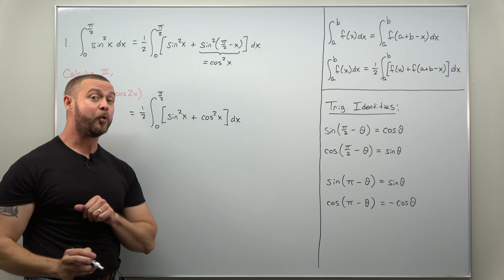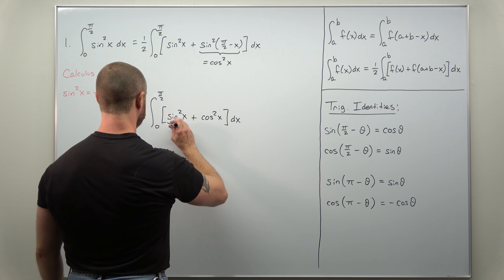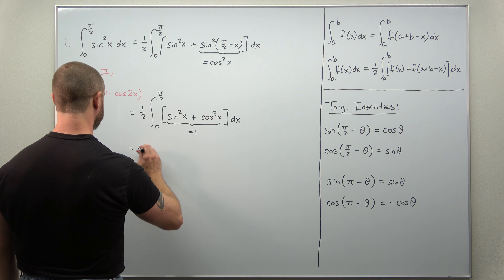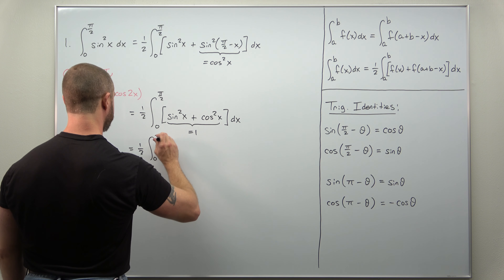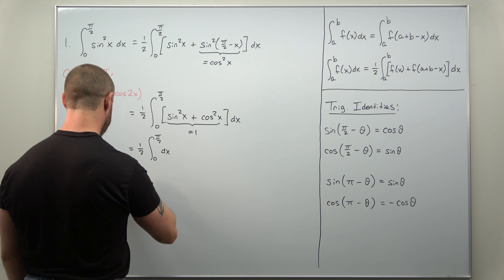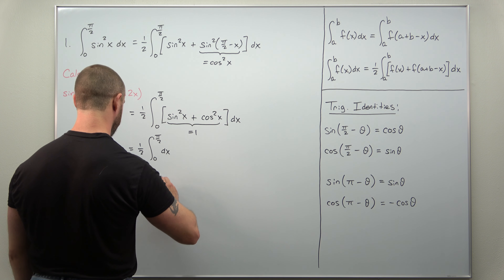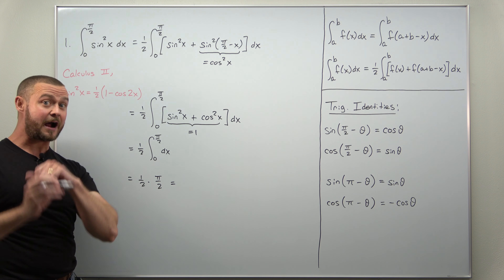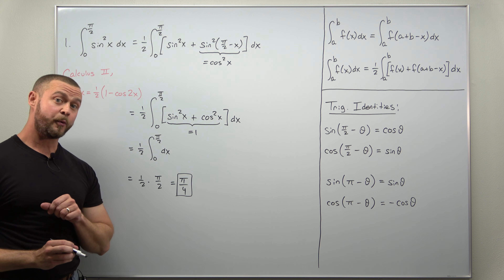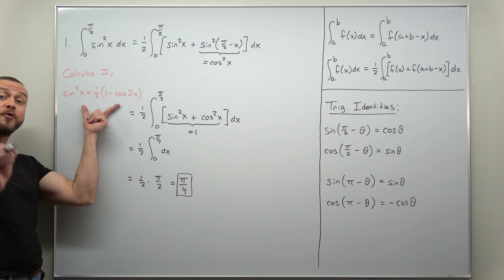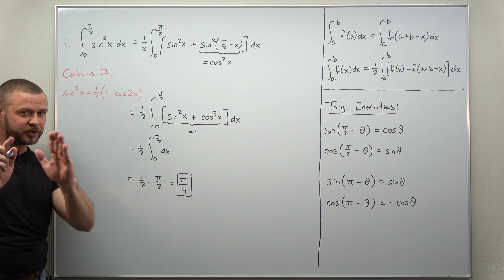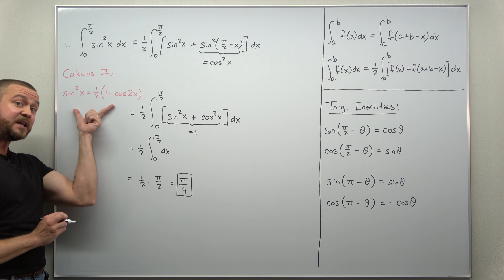Using the Pythagorean identity, sine squared plus cosine squared equals 1, so the expression inside the brackets simplifies to 1. We're left with the simple integral: one half times the integral from 0 to pi over 2 of dx. That integral evaluates to pi over 2, and multiplying by one half gives us the final answer of pi over 4. This is much more streamlined than the standard calculus 2 approach.